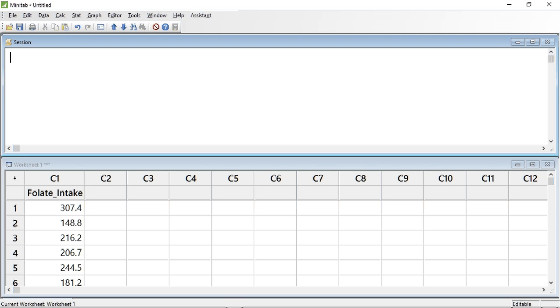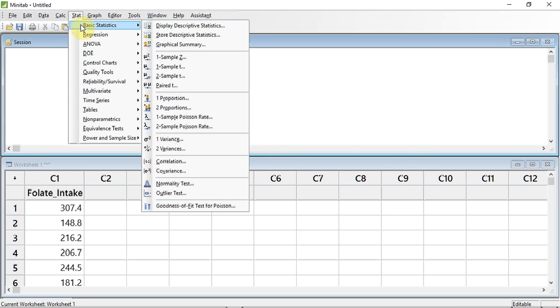I have already entered the data from table 10.6 into Minitab. To do the test, we need to go to Stat, click, down to Basic Statistics, and then across and down to one-sample t-test, and click.